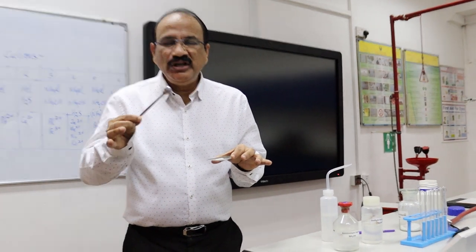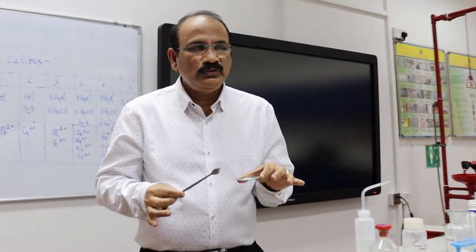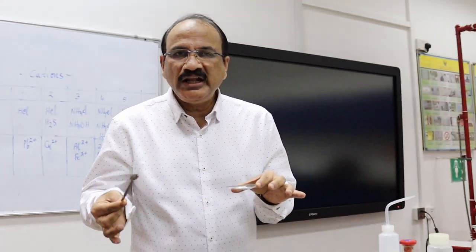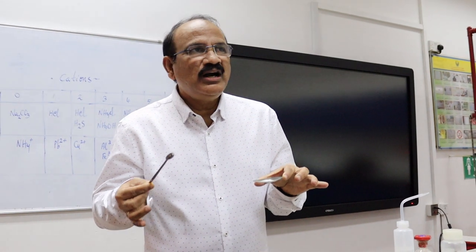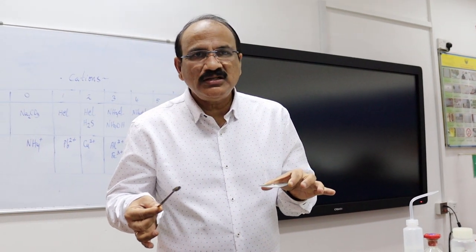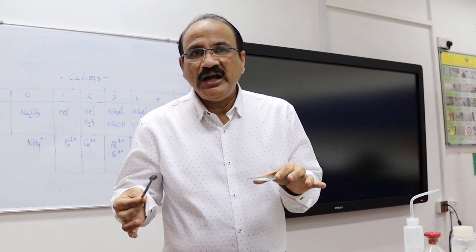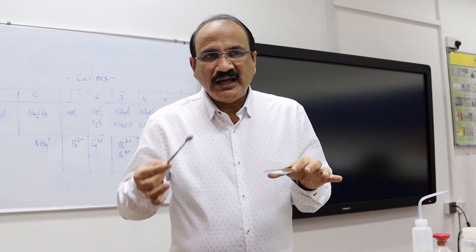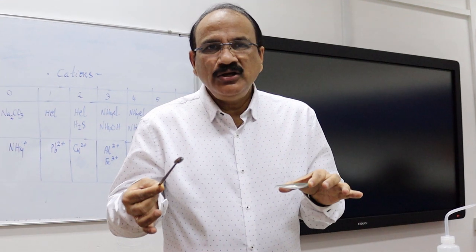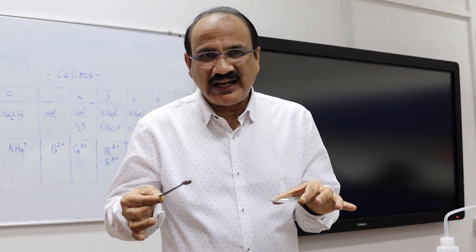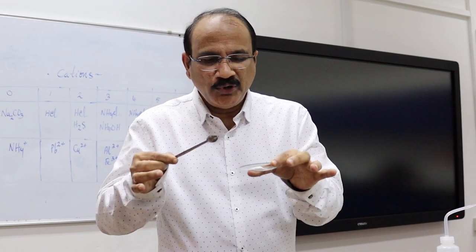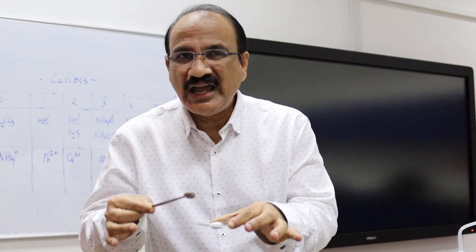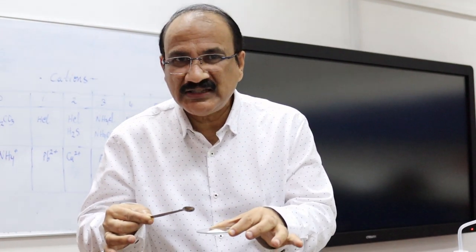Okay students, we are into group 3 now. As you know, the group 3 reagents are ammonium chloride and ammonium hydroxide, and the typical group 3 cation is Al3+. So I am going to show the reactions of Al3+.